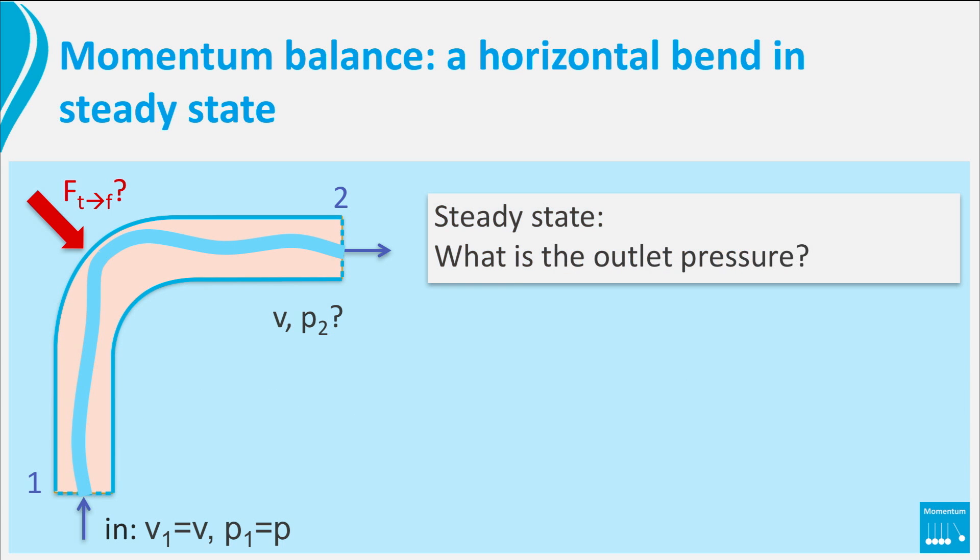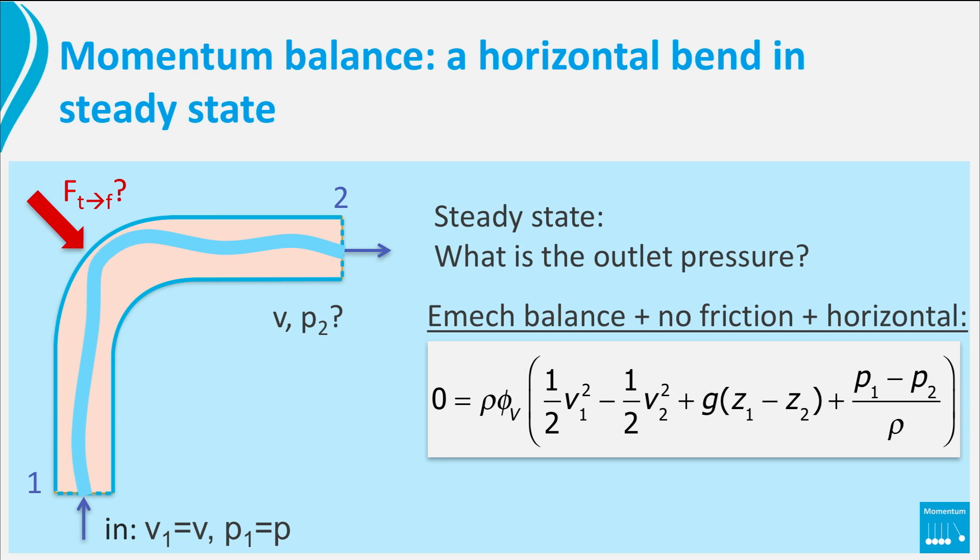Next the outlet pressure. Since friction is ignored, there is no dissipation of mechanical energy into heat. And thus we can set up a steady state mechanical energy balance for the same control volume. We already found V1 is V2, and we know that the band is horizontal, thus we back out P2 equals P1.